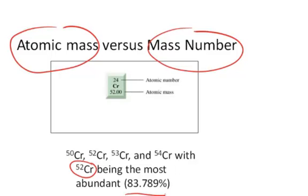That means if you had a sample that had 10 chromium atoms, 1, 2, 3, 4, 5, 6, 7, 8, 9, 10, 8 of them would be chromium 52, and the other two would be one or the other of those.